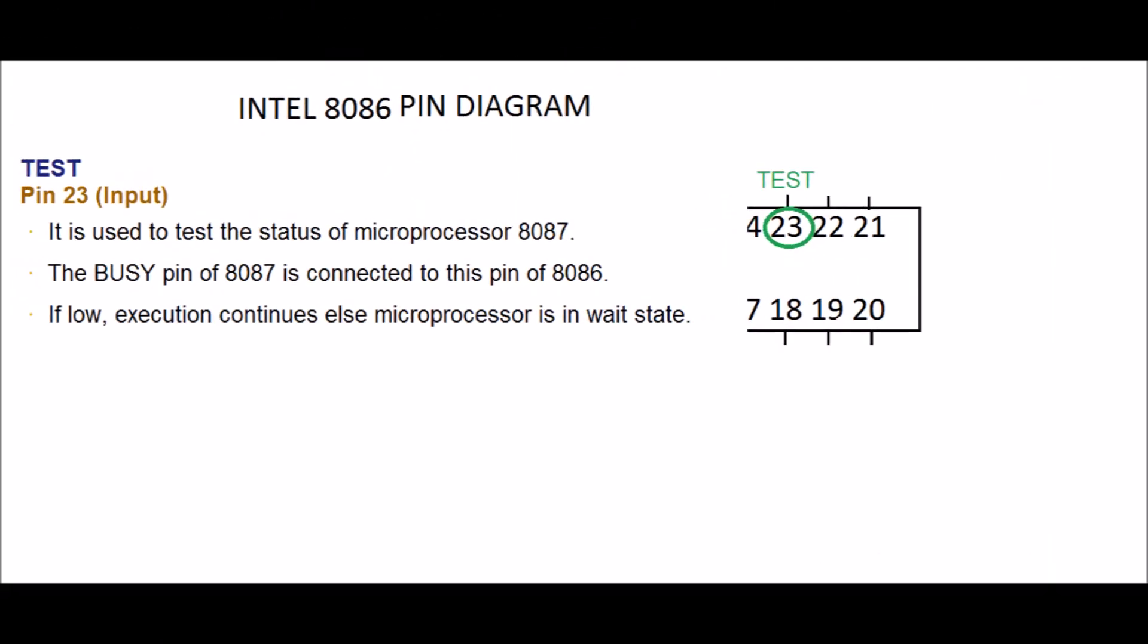Test, PIN 23. Input. It is used to test the status of microprocessor 8087. It shows the status of flag present in the microprocessor. The busy PIN of 8087 is connected to this PIN of 8086.